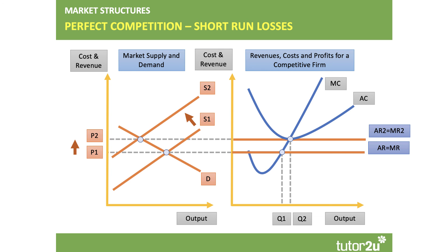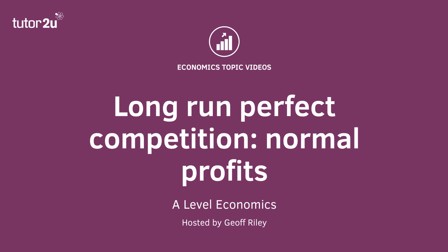In this case, the output of the firm will be Q2, and at Q2 the price P2 is just equal to the unit cost of supply. Normal profits are being made.